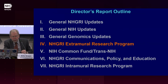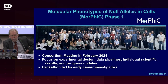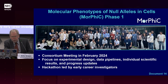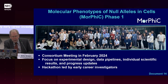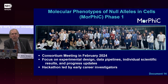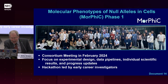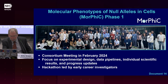Moving on to the Extramural Research Program: in August 2022, NHGRI launched the Molecular Phenotypes of Null Alleles in Cells, or Morphic Consortium, which aims to develop an extensive catalog of molecular and cellular phenotypes for null alleles of every human gene. The program is still in its first phase, laying the foundation and generating early data. Morphic had its first full consortium meeting this past February, highlighting experimental design, data pipelines, and individual scientific results. The meeting also included a hackathon led by early career investigators from the consortium's data analysis centers, who explored multiple analysis approaches using initial Morphic data sets.